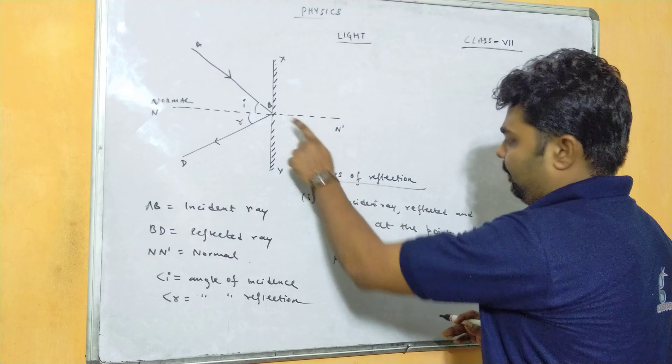Their size is also the same. Therefore, point number three: the distance of the object from the mirror is equal to the distance of the image from the mirror. Next, the image formed by the plane mirror is laterally inverted. This is very important.